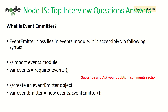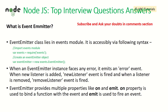What is the event emitter? The EventEmitter class lies in the events module and is easily accessible by importing it. We can create an event emitter like: eventEmitter = new events.EventEmitter(). When an EventEmitter instance faces an error it will emit an error event. When a new listener is added, the newListener event is fired. When a listener is removed, the removeListener event is fired. It has multiple properties like on, emit, etc. Make sure you go through both the event loop and event emitter questions together.